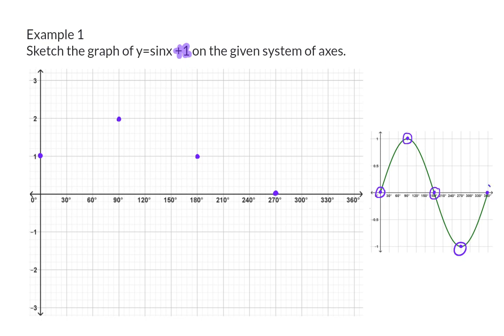And finally, our 360 coordinate will move up to a y value of 1. And finally, we can draw the sin curve and here you will see that it now has one y-intercept and one x-intercept.